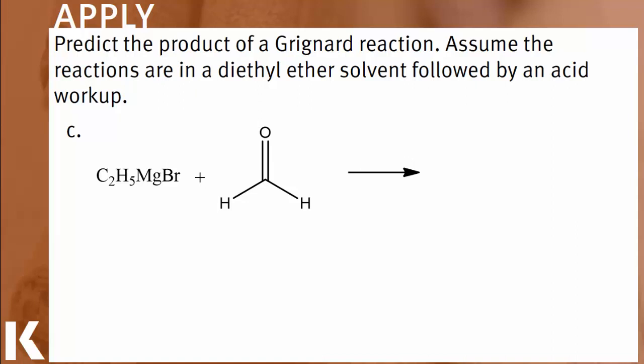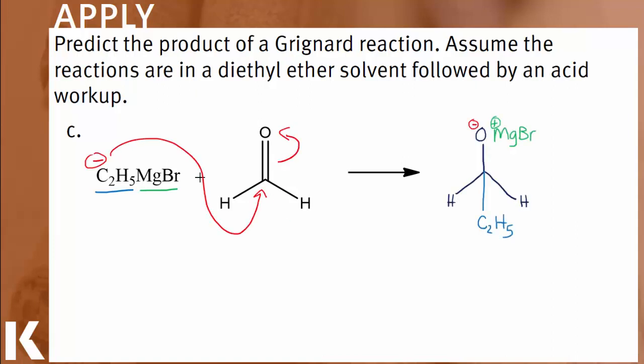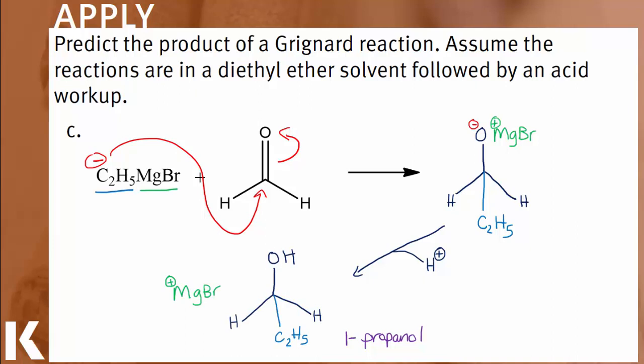In the final reaction, we have ethyl magnesium bromide reacting with formaldehyde. The nucleophilic carbon will attack the carbonyl carbon, giving us the addition of the ethyl group and a magnesium alkoxide intermediate. Acid workup displaces the metal and we have our final product, 1-propanol.